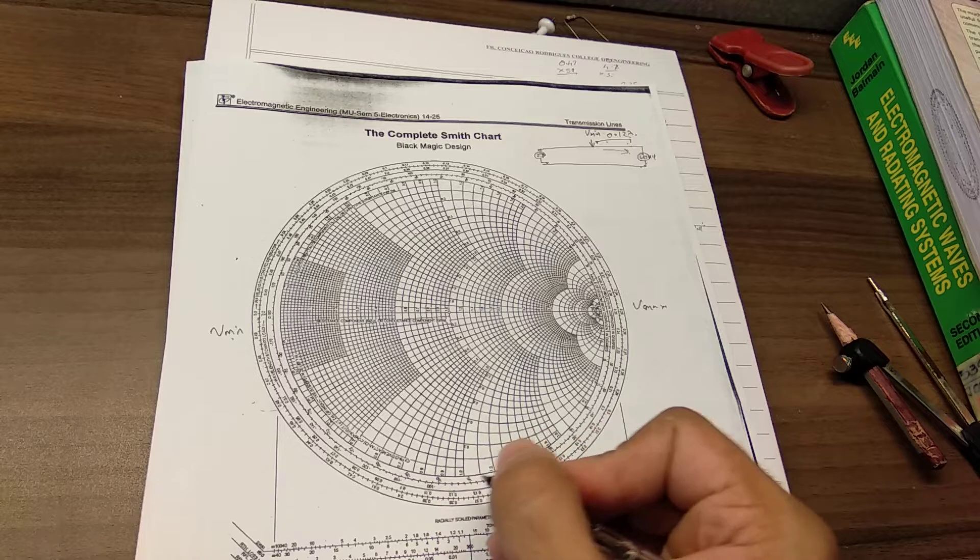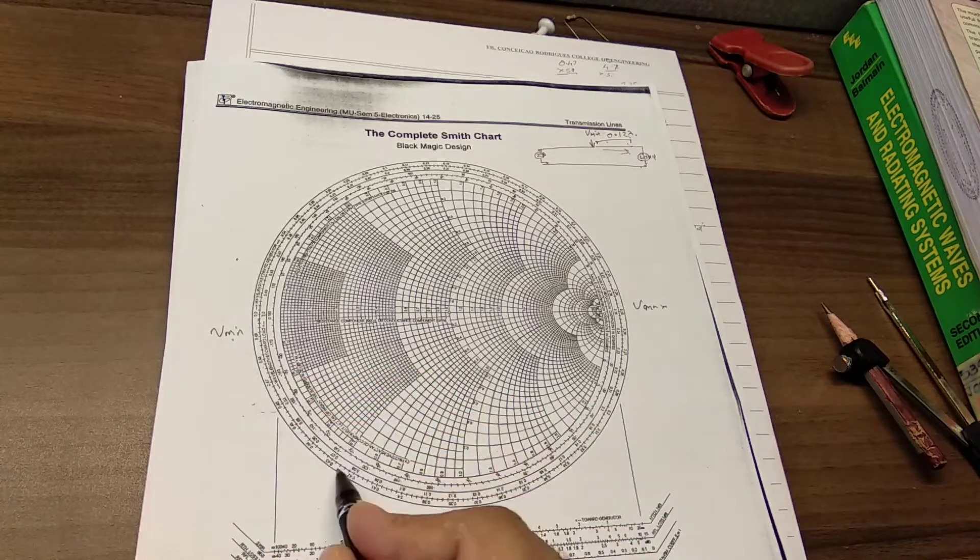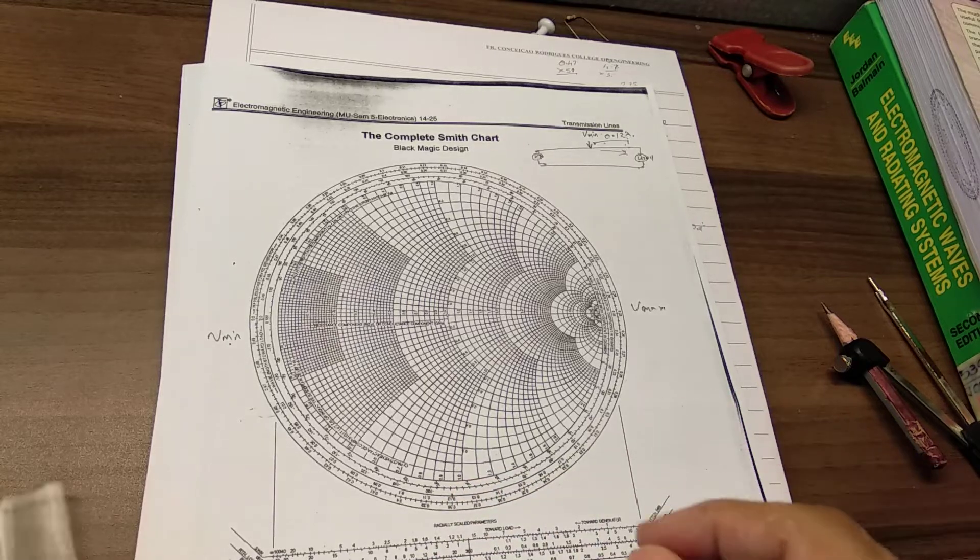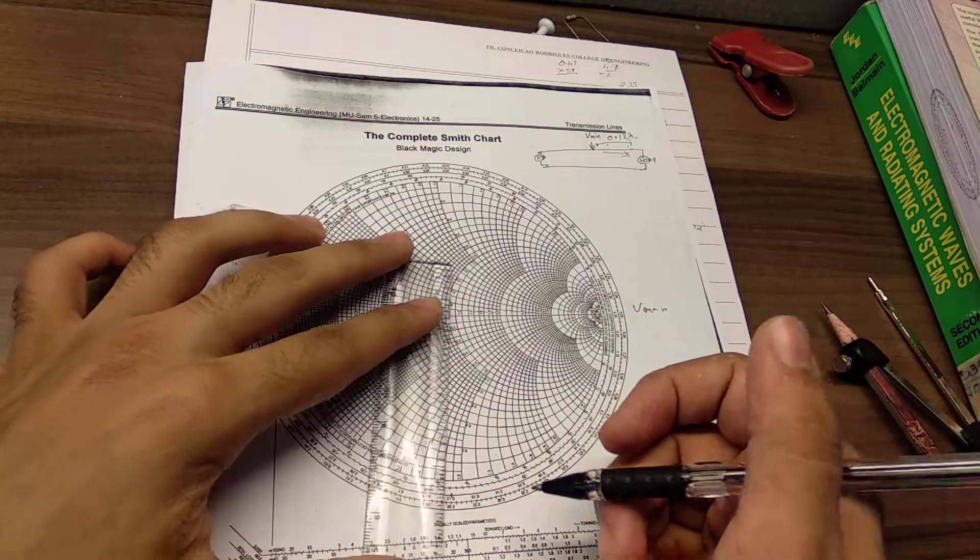Which is 0.12 lambda from the load. So let's do it and let's mark the point 0.12. Now I'm going to join it with the center of the circle or the Smith chart.